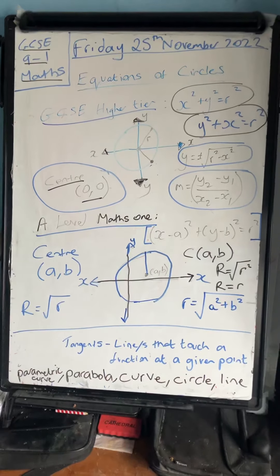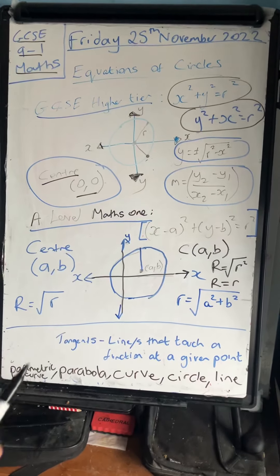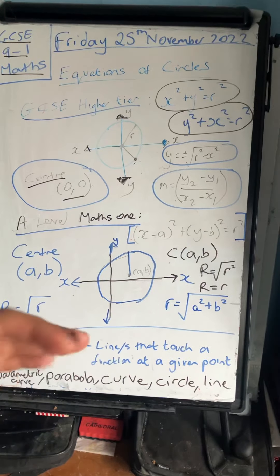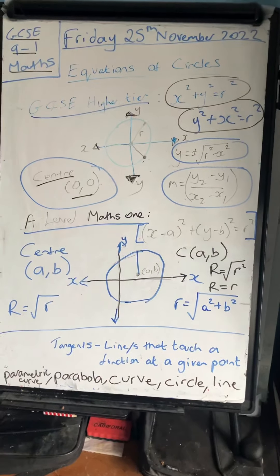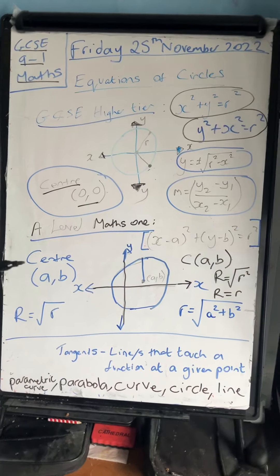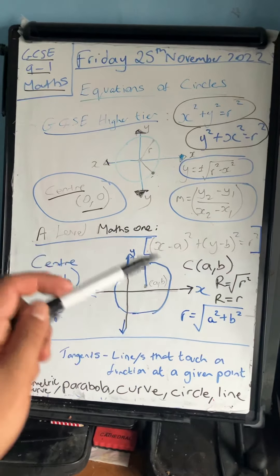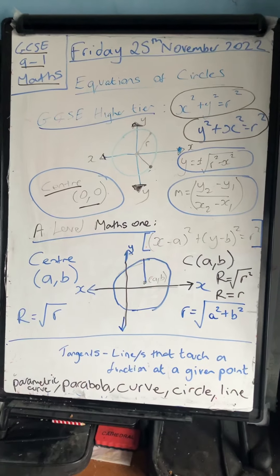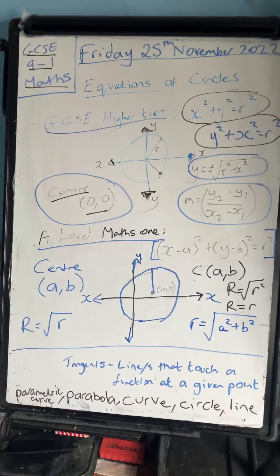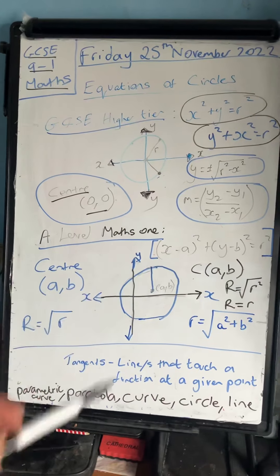For A-level maths it might get a bit more tricky. You might be asked to work out the radius from two points - you would use Pythagoras to work it out, so I've put the formula here. Make sure that you're happy with the center and the radius and questions regarding tangents, bisection, and intersection for these sorts of circles.